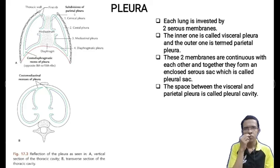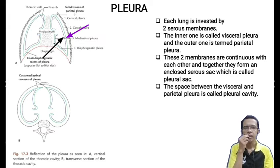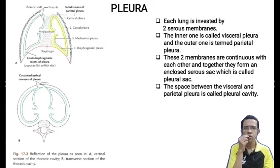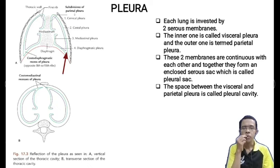We have got two lungs which are the respiratory organs. Each of the lungs is invested by two serous membranes. The inner one is called the visceral pleura and the outer one is called the parietal pleura. These two membranes are continuous with each other, and together the visceral and parietal pleura form an enclosed serous sac which is called the pleural sac.